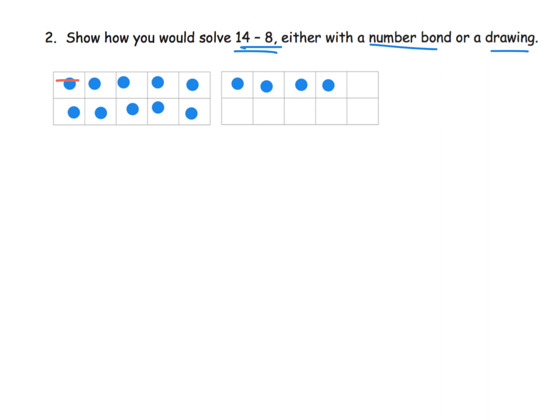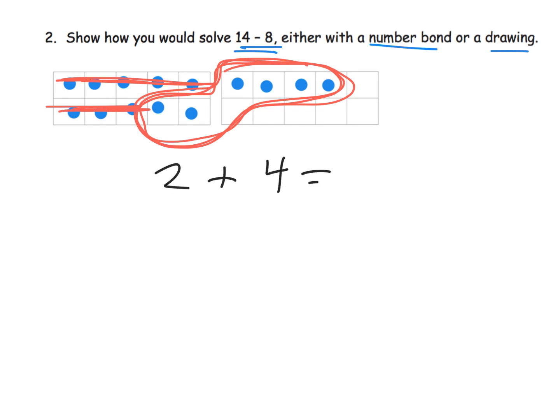Now using the drawing we're going to subtract 8. So that's pretty straightforward. We're gonna cross off 8. So that's 5 the whole top row plus 3 in the bottom row and so now we are going to see that we have the original 4 plus the remaining 2 in the 10 frame. The answer is 4 plus these 2 so the answer is 6. So that means 14 minus 8 equals 6. Okay so that's the drawing.